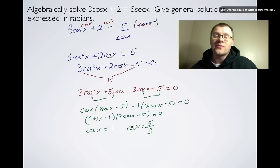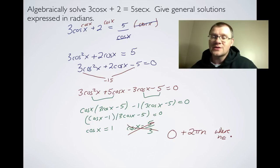Because cosx only goes as high as positive 1. So this is not one of our solutions. So our answer is 0 radians + 2πn where n is any integer.